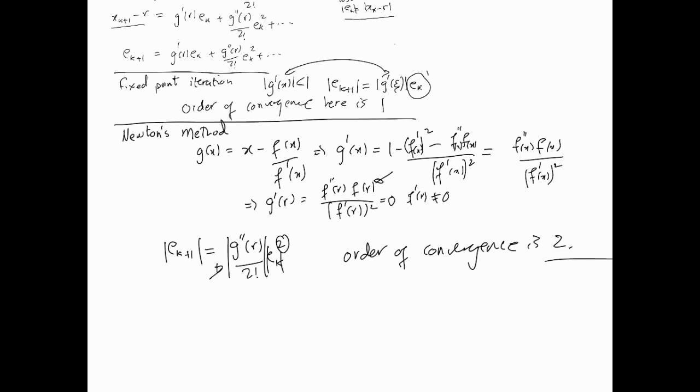And of course, here, we're assuming g'' at some value between the root and close to the root, divided by 2!, will most likely be some value less than 1, we're hoping. But as I told you, it's not necessary, because we have quadratic convergence in this case. But anyhow, this is how we actually calculate the orders of convergence.